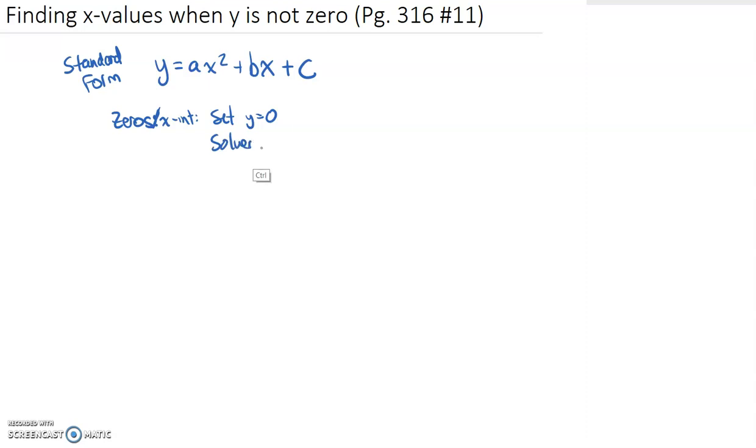And so the two ways we would have to solve for x would be we could use factoring. And the other way we could do that is use the quadratic formula. And so the quadratic formula is negative b plus minus the square root of b squared minus 4ac divided by 2a.